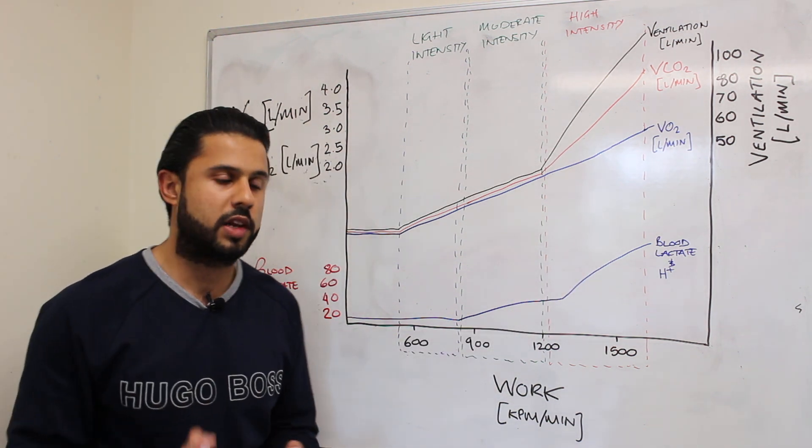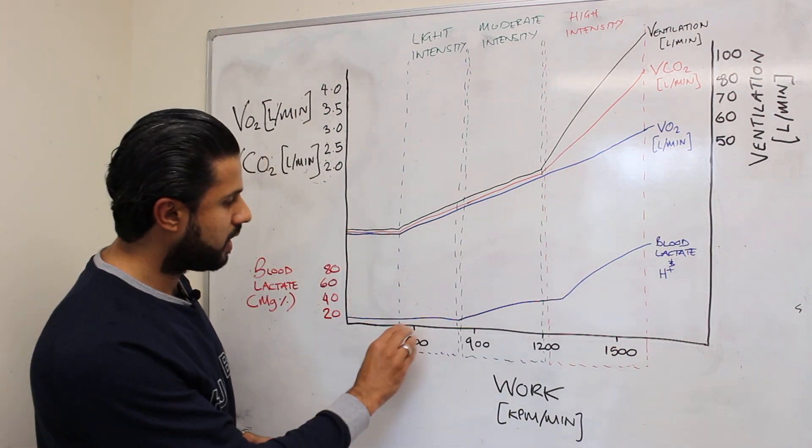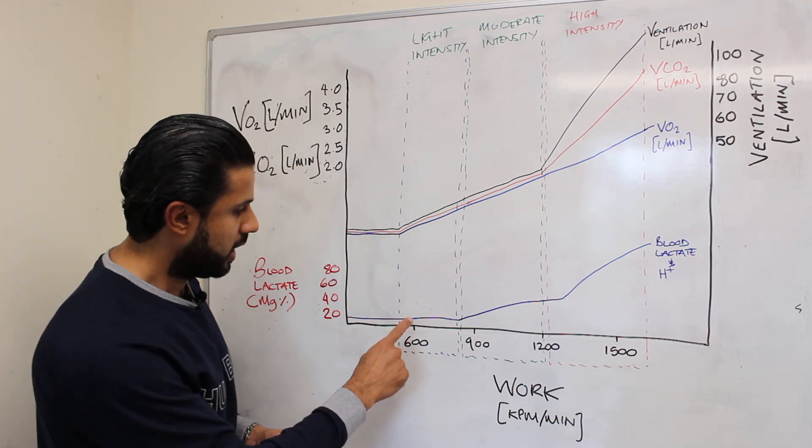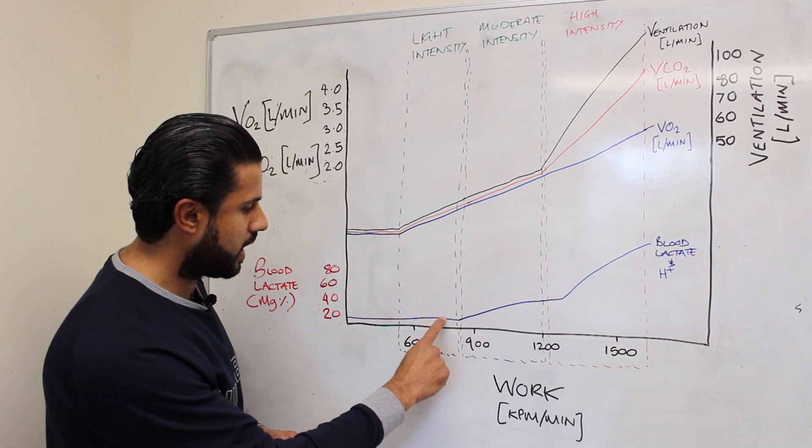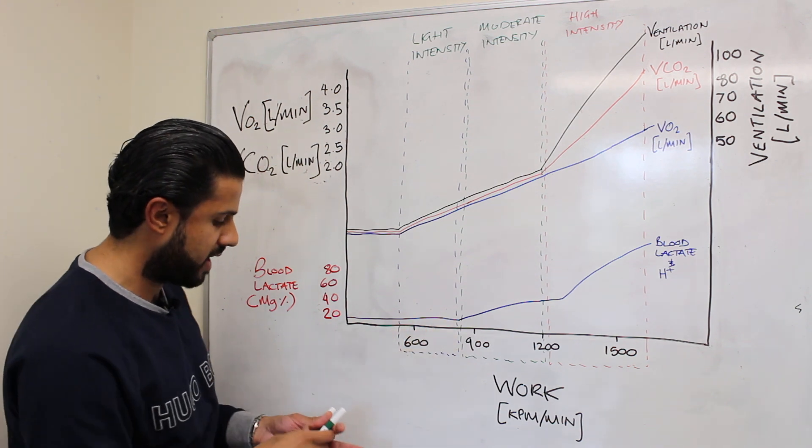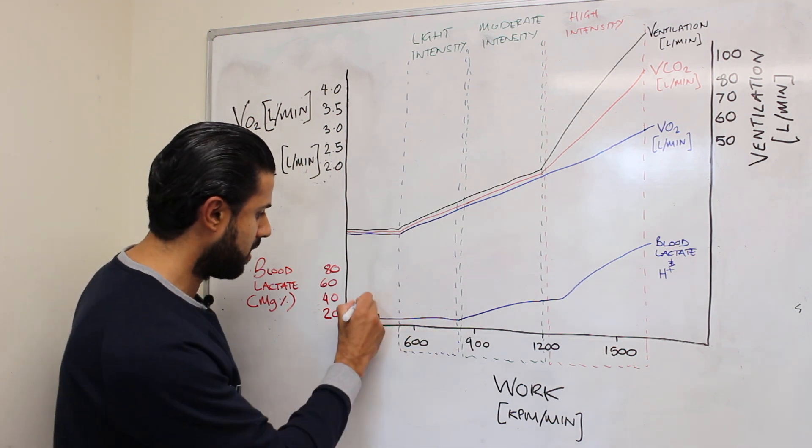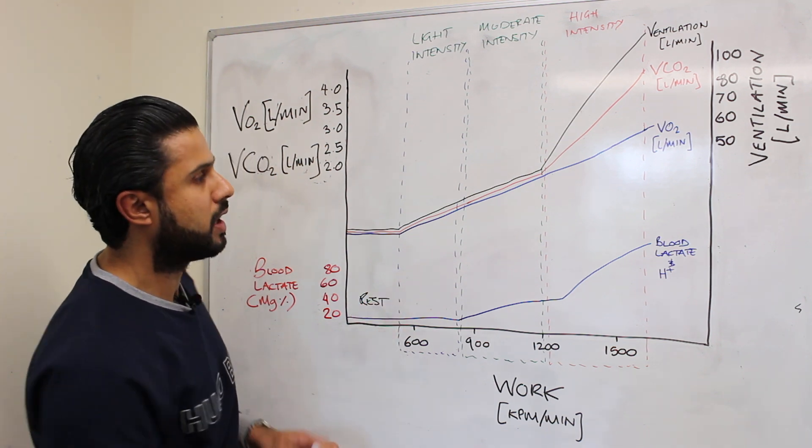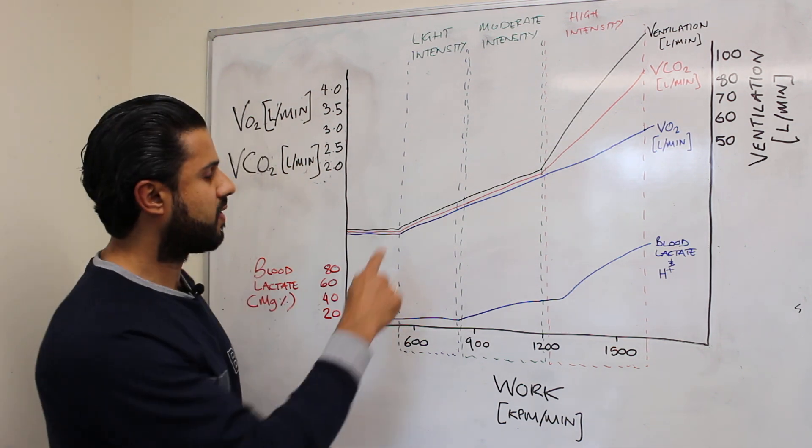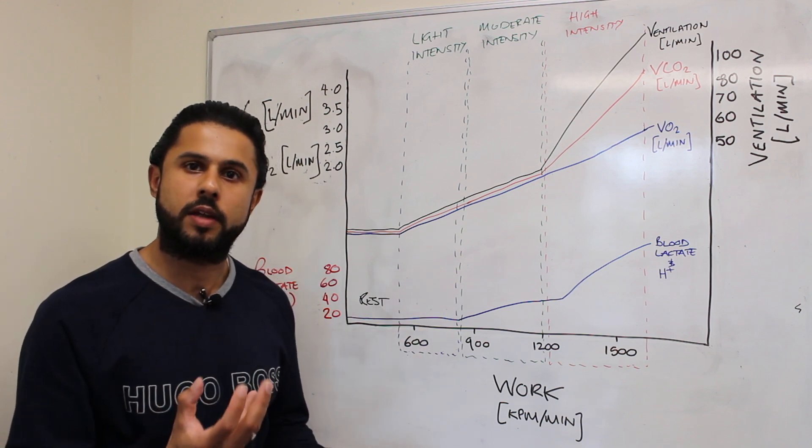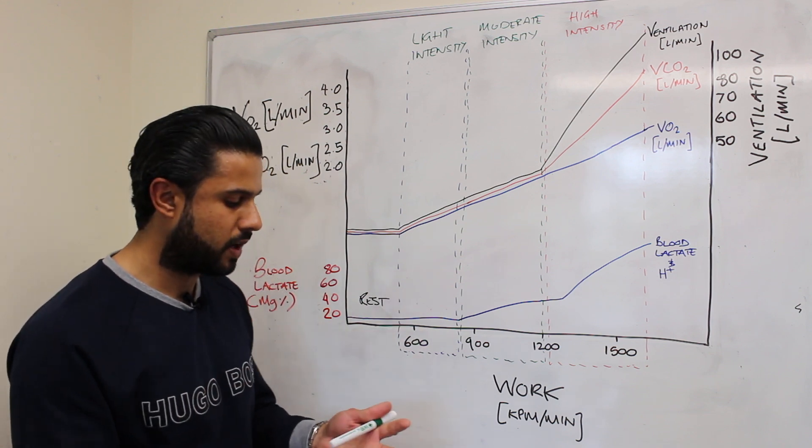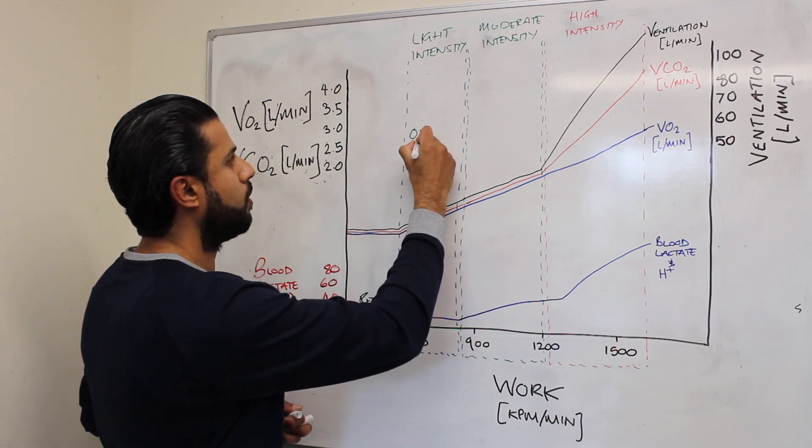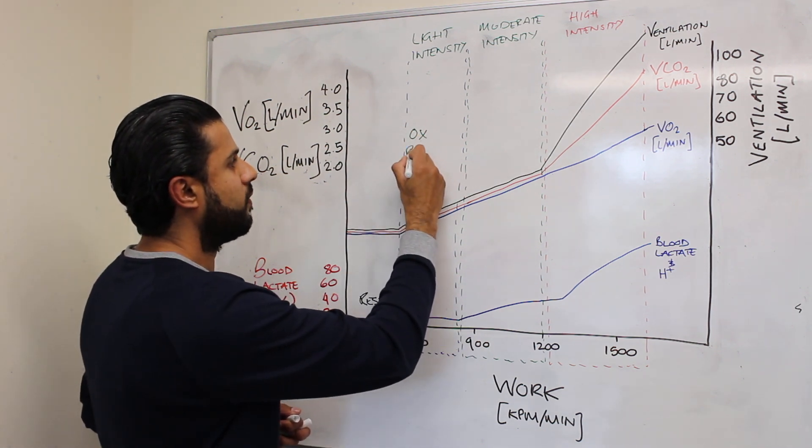Now let's have a look at the ventilatory threshold. In a light intensity activity such as a light run or a light jog you will see that lactate levels remain quite similar to rest. So this is a resting period here and the lactate levels remain quite similar. What we also see is that the muscle contraction will require ATP. Now that ATP is going to be supplied by oxidative phosphorylation.